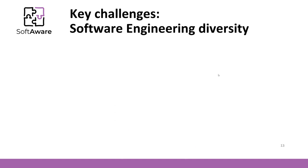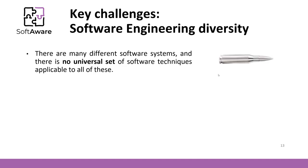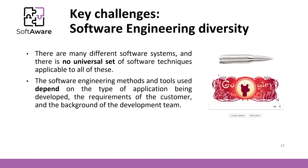Another key challenge is software engineering method diversity. There is no universal set of software techniques that is applicable to the creation of all software systems — that is, there is no silver bullet. The software engineering methods and tools used depend on the type of application being developed, the requirements of the user, and the background of the development team. It means no one can expect to master one process and use it always. A professional software engineer needs to know a variety of software engineering methods to be able to choose the right ones.